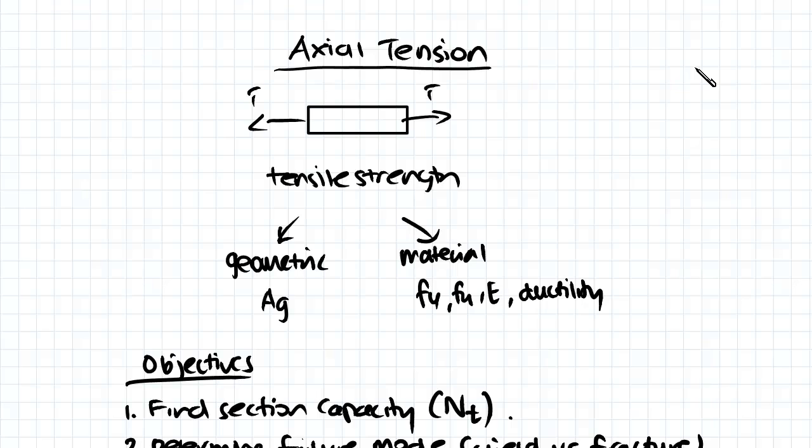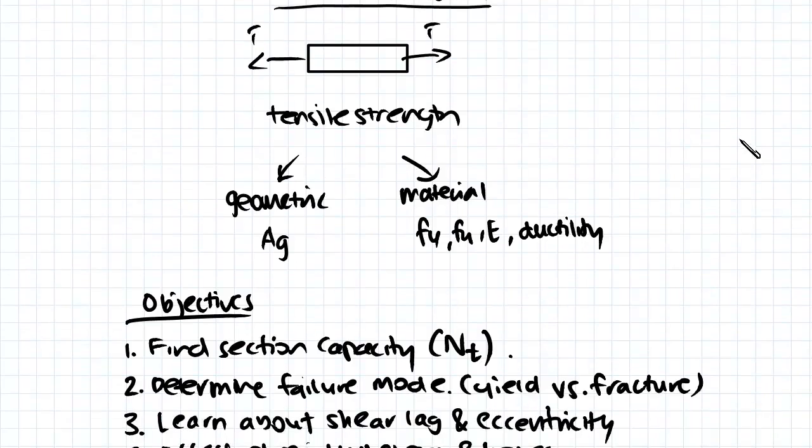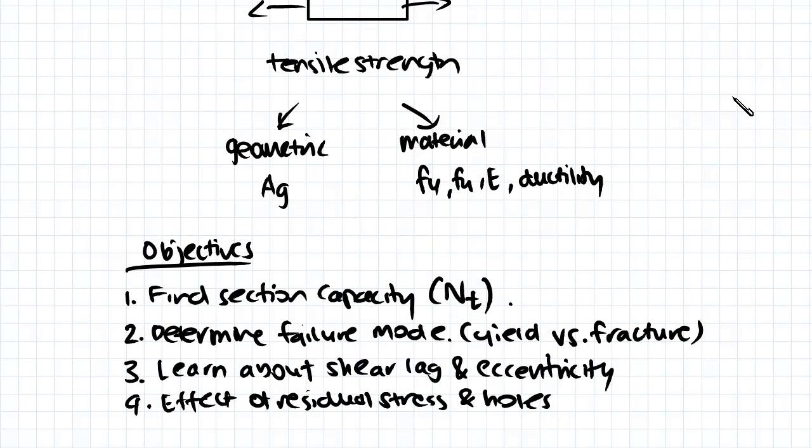Now the objectives of this chapter are listed below and we're going to try to cover all of them in this chapter. We're going to first and foremost find the section capacity of a member in tension and this is denoted in NT.